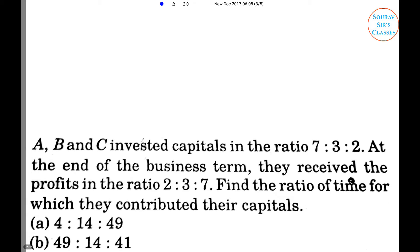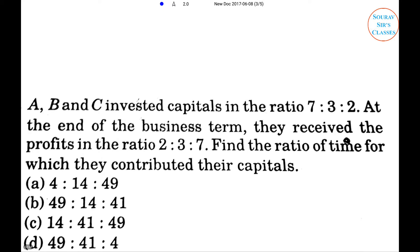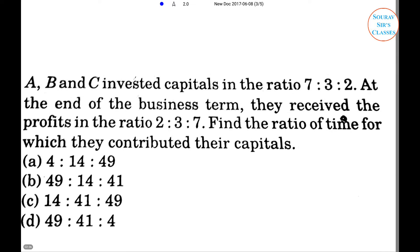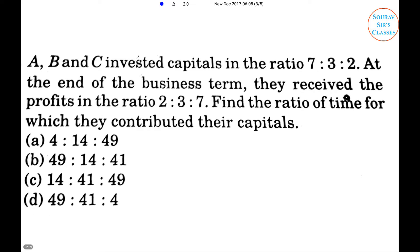Next question: A, B, and C invested capitals in the ratio 7:3:2. At the end of the business term, they received the profits in the ratio 2:3:7. Find the ratio of time for which they contributed their capitals. Now, given ratio of capitals A, B, and C is 7:3:2, and the ratio of profit equals 2:3:7.